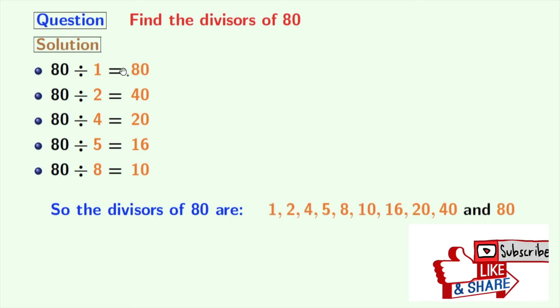These numbers are 1, 2, 4, 5, 8, 10, 16, 20, 40 and 80. So, the total number of divisors of 80 is 10.